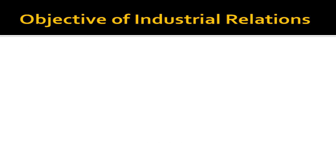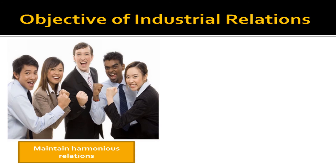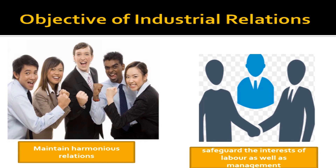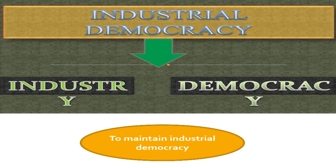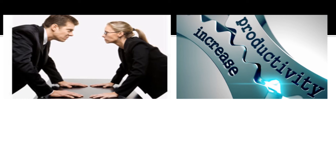Let's now discuss the objectives of industrial relations. First, to develop and maintain harmonious relations between management and labor for higher productivity and industrial progress. Second, to safeguard the interests of labor as well as management by securing the highest level of mutual understanding and goodwill between all sections in industry. Third, to establish and maintain industrial democracy based on the participation of labor in the management and gains of industry so that the personality of every individual is fully developed. Fourth, to avoid all forms of industrial conflict so as to ensure industrial peace by providing better working and living standards to workers. Fifth, to raise productivity in an era of full employment by reducing the tendency of higher labor turnover and absenteeism.